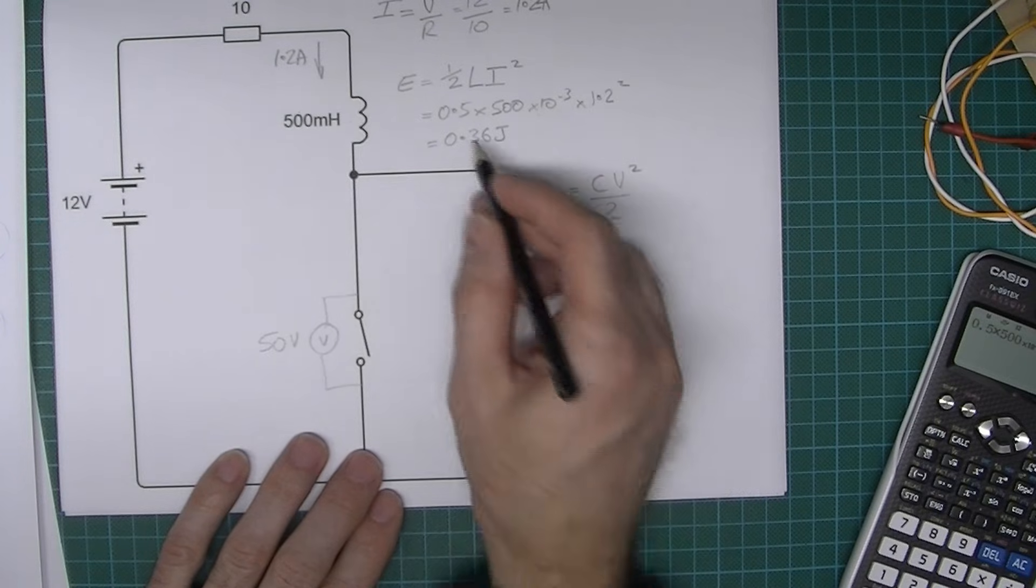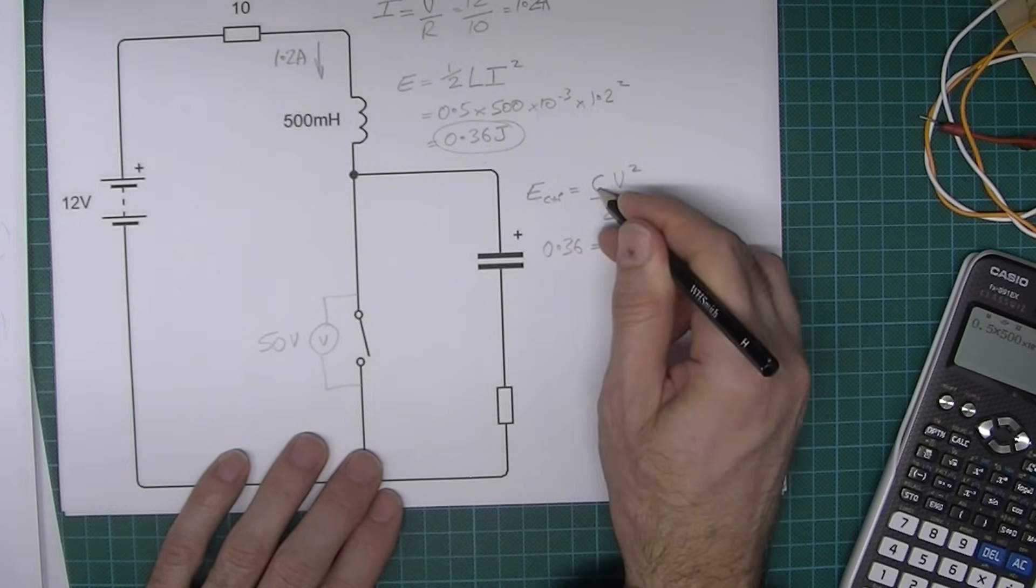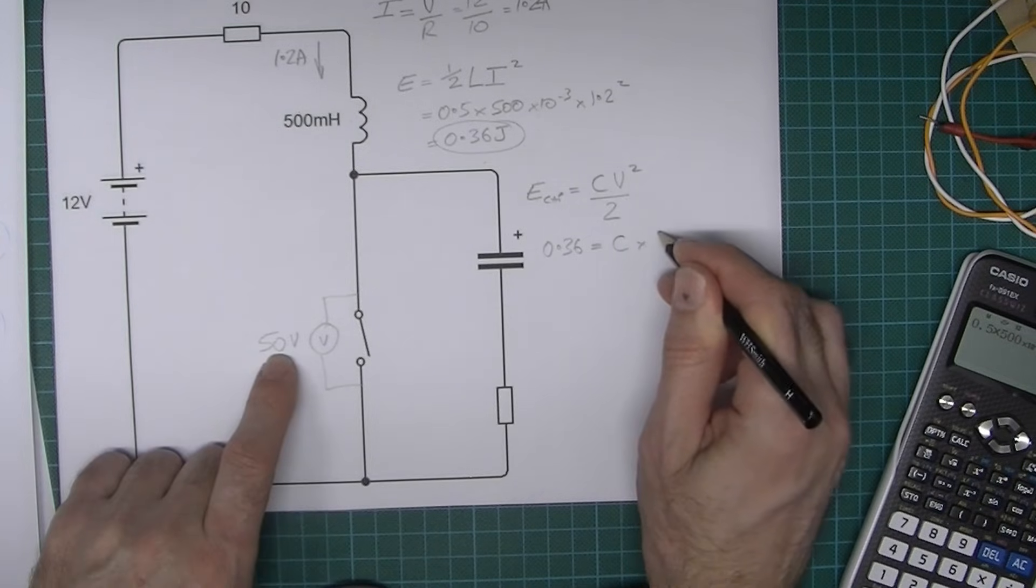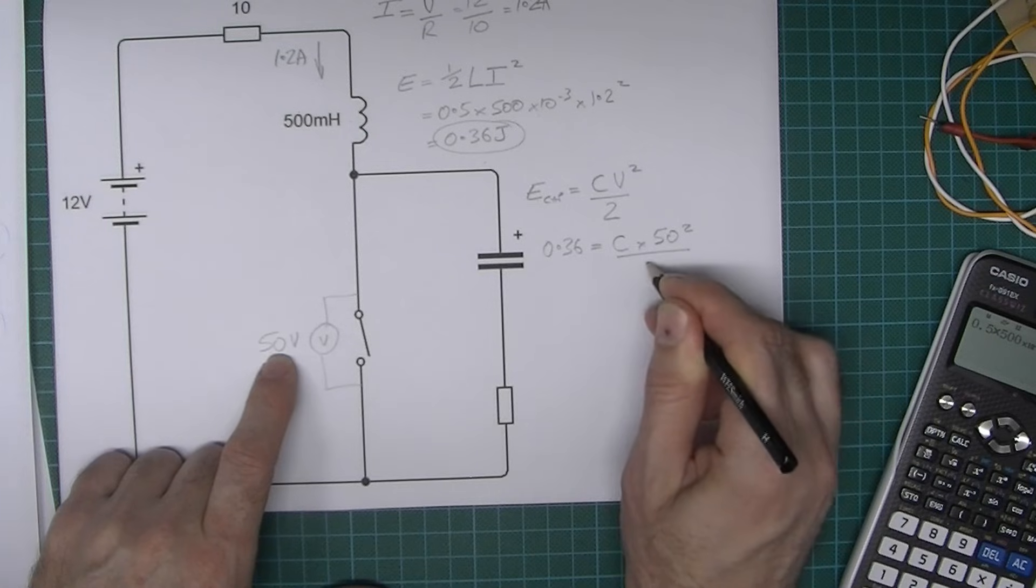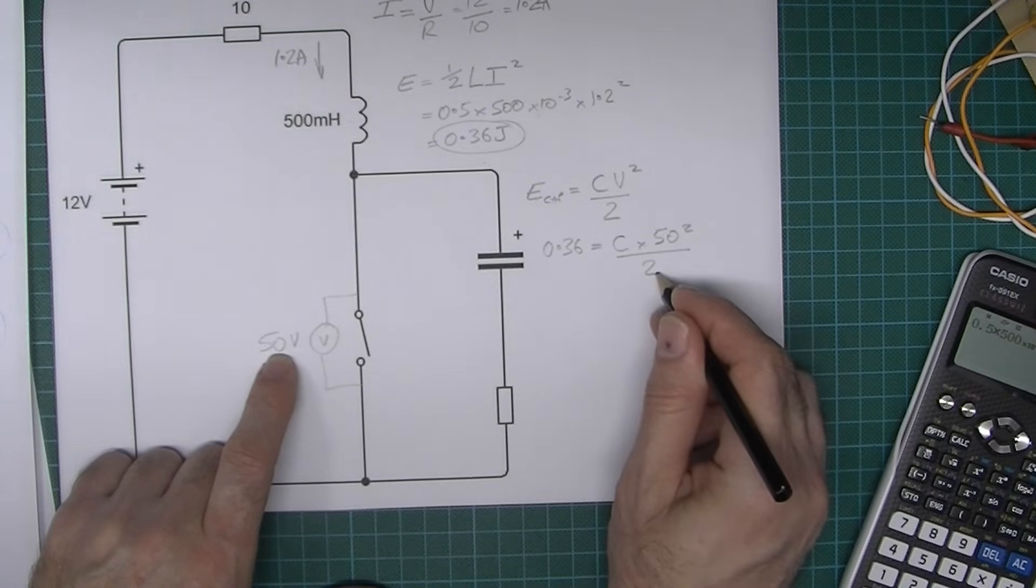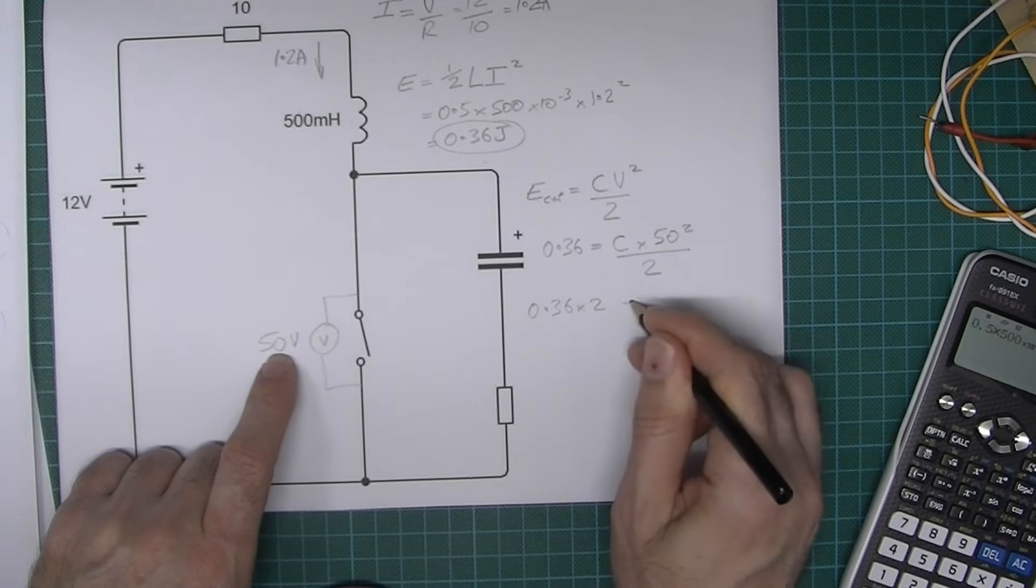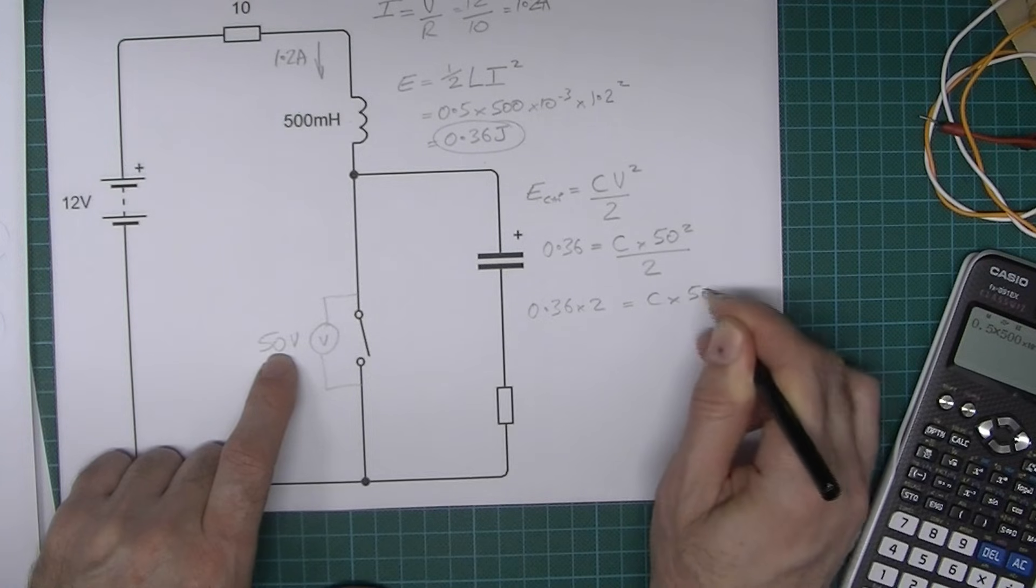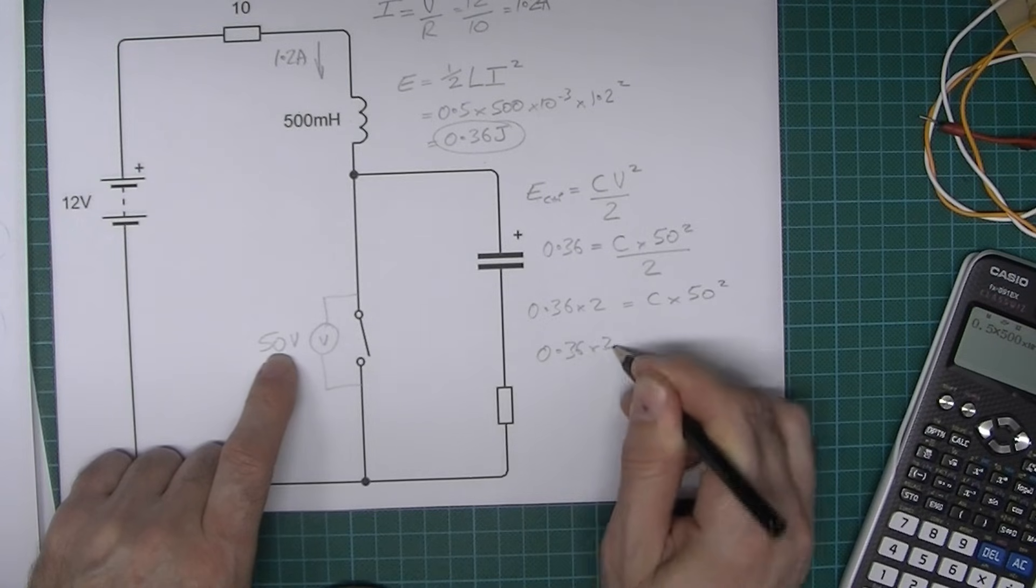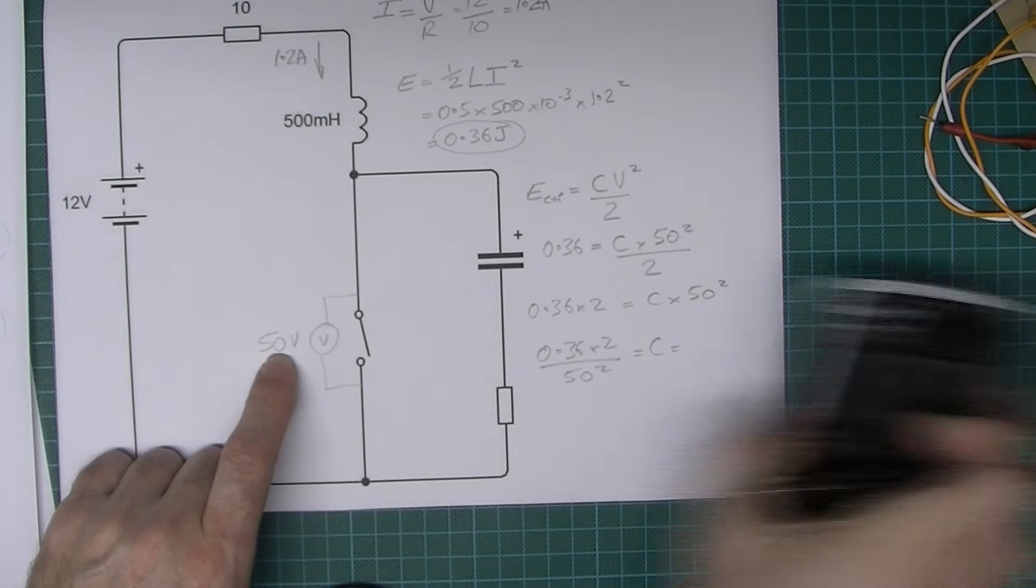So we say the energy, remember the energy was 0.36 joules, so 0.36 equals the capacitance which we don't know, times the voltage squared which we do know - that's 50 squared - divided by two. What are we going to do next? We multiply this side by two, so 0.36 times 2 equals the capacitance times 50 squared. I want to get rid of this 50 squared, so 0.36 times 2 divided by 50 squared is going to equal the capacitance.